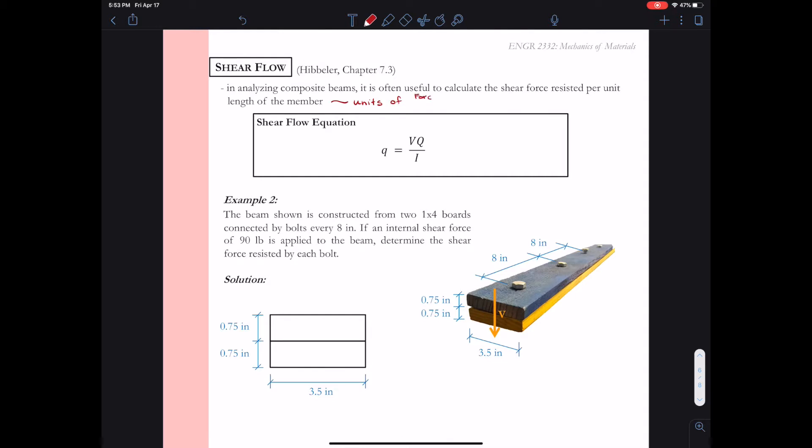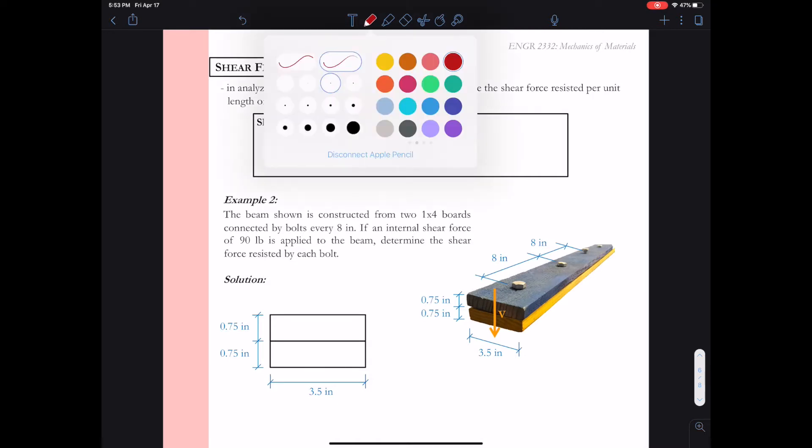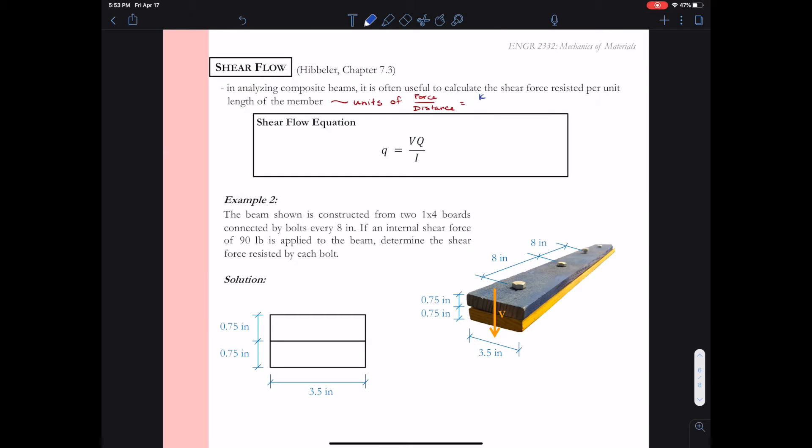Basically we want the shear flow to be in units of a force per distance. So that would be so many kips per inch, or maybe just pounds per inch, or if you're working in SI units that would be newtons per meter.